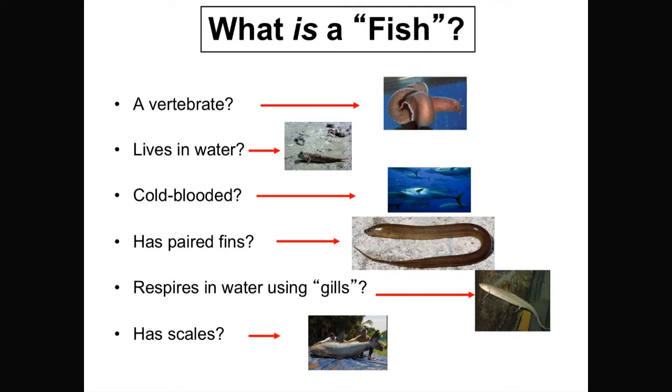This is a mudskipper. This is a fish that actually spends most of its time out of water. You'll see a better slide of it in a second. It has jointed pectoral fins that it can actually walk on the water. The males incubate the eggs in air, but it spends most of its time actually out of the water. Many tunas and sharks are actually warm-blooded. They're not cold-blooded.